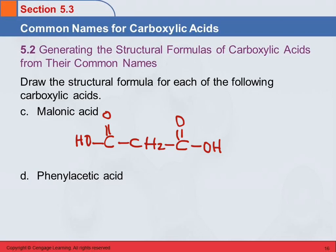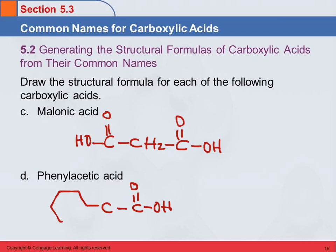Phenylacetic acid. Well, acetic acid has two carbons, so we've got two carbons with the carboxyl group. And phenyl — that's an aromatic ring, a benzene ring as a substituent. There's only one place we can put it: we can't put it on the carboxyl carbon, that carbon's full. So it has to go on the other carbon. We'll put the phenyl — the benzene ring — there, and this carbon gets two hydrogens. That's phenylacetic acid.